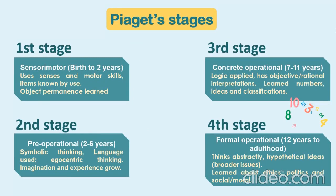Piaget believed that all children progress through four stages. In his view, cognitive development occurs in a series of four distinct stages characterized by increasingly sophisticated and abstract levels of thought. These stages always occur in the same order and each builds on what was learned in the previous stage. Piaget believes each stage in development occurs as a result of interaction between maturation and environment, and that intelligent behavior is the ability to adapt.